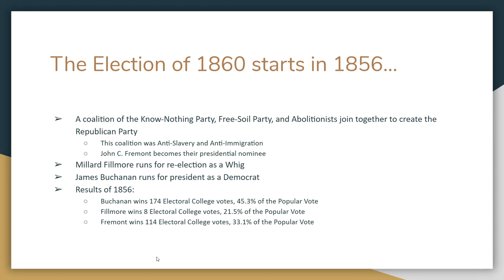Millard Fillmore only gets 8 electoral college votes. John C. Frémont gets 114 — pretty good for a first-time party, they almost pulled it off. But it's James Buchanan who wins with 174 electoral college votes, getting a little over 45% of the popular vote, and he becomes president in 1856.